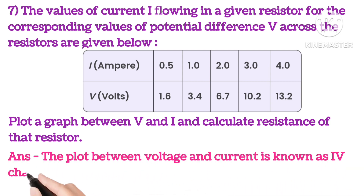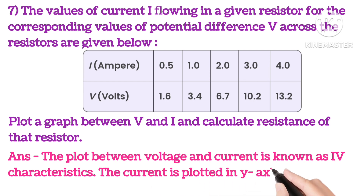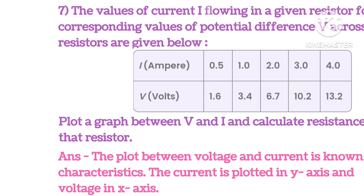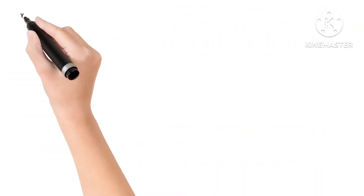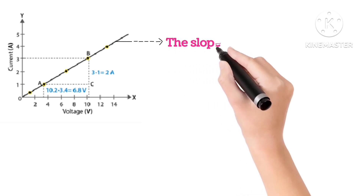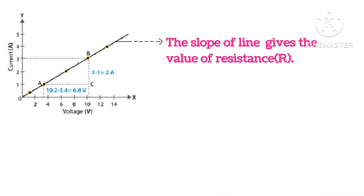Now, the plot between voltage and current is known as IV characteristic, and the current is plotted in y-axis and voltage in x-axis. You can see the graph here.